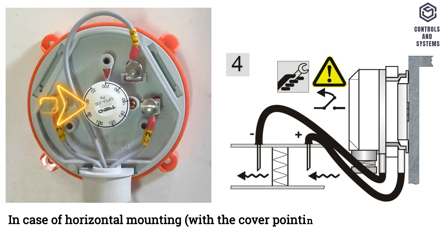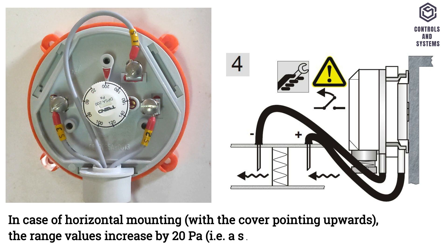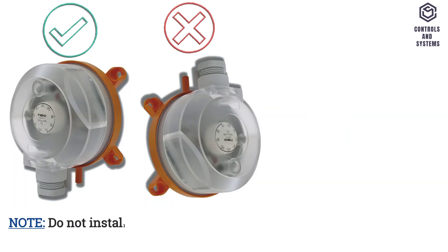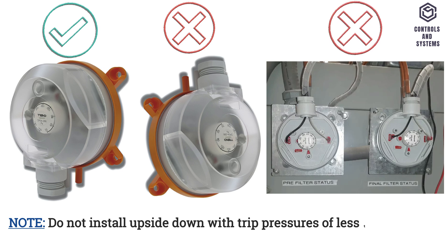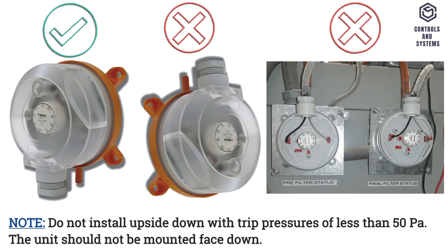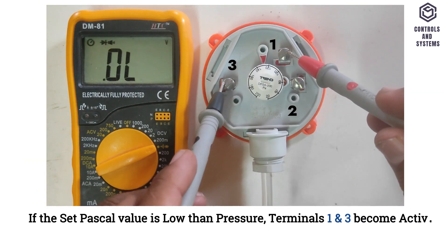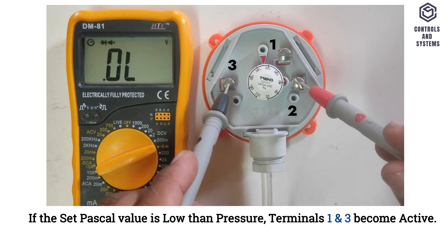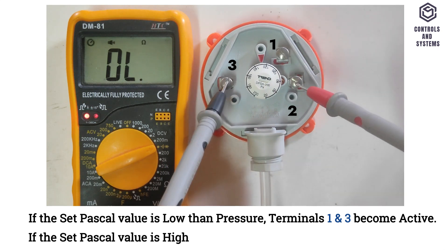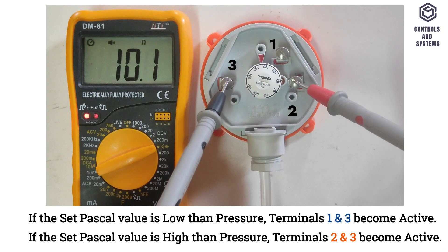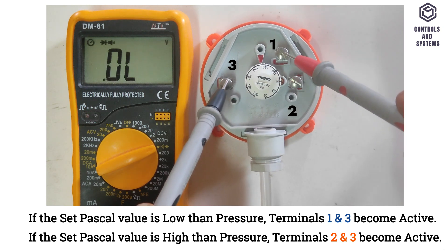In case of horizontal mounting with the cover pointing upwards, the range values increase by 20 Pascals — for example, a setting of 40 Pascals will switch at 60 Pascals. Do not install upside down with trip pressures of less than 50 Pascals; the unit should not be mounted face down. If the set Pascal value is lower than the pressure, terminals 1 and 3 become active. If the set Pascal value is higher than the pressure, terminals 2 and 3 become active.